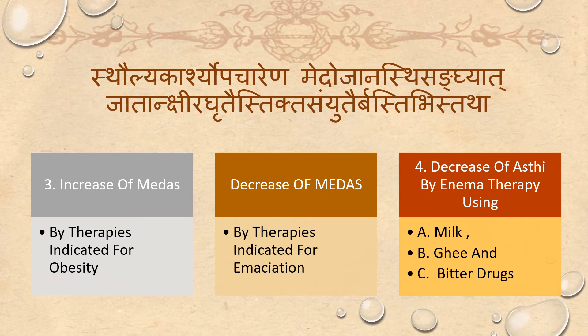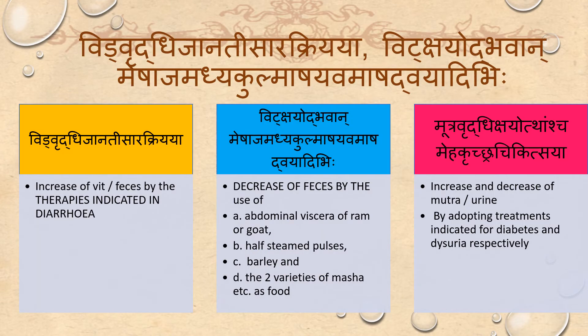Decrease of Asthi is treated by enema or Vasti therapy using Sheera (milk), Ghrita (ghee), and Tikta (bitter drugs). With Vridhi (increase), Chan Adhisara Kriya — therapies indicated for diarrhea are used. For decrease of feces, we use the abdomen and viscera of ram or goat, half-steamed pulses, barley (Yavam), and the two varieties of Masha (Masha Dvayam).